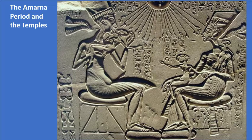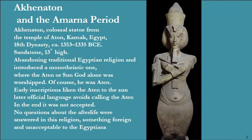Welcome to the last lecture on ancient Egypt. We are going to talk about the Amarna period and the temples. The Pharaoh Akhenaten, when he assumed the throne, decided to abolish the polytheistic religion that everyone had been following for over 2,000 years and established a monotheistic one where everyone worshipped the Aten, or the sun god. Naturally, he was the sun god on earth.